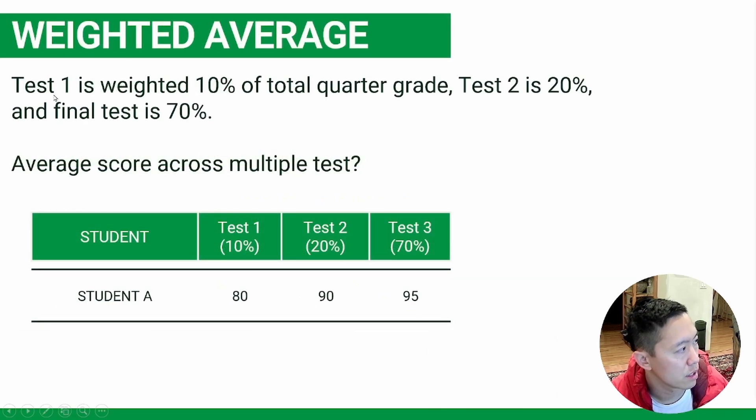Now weighted average. If test one is weighted 10%, test two is 20%, and the final 70%, how would you calculate the average across multiple tests?